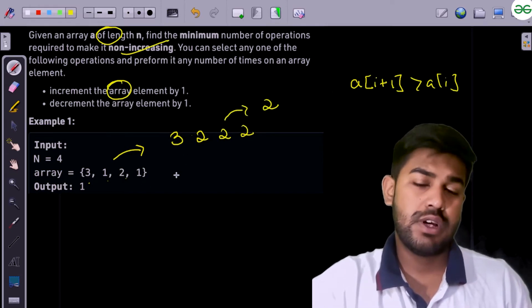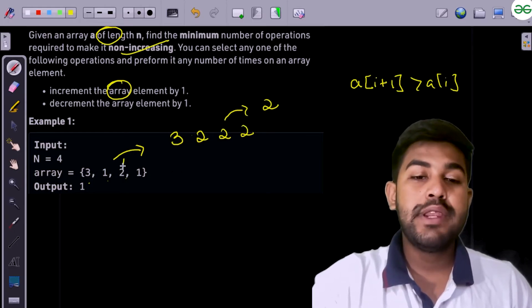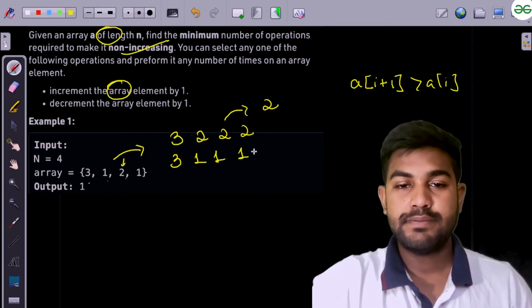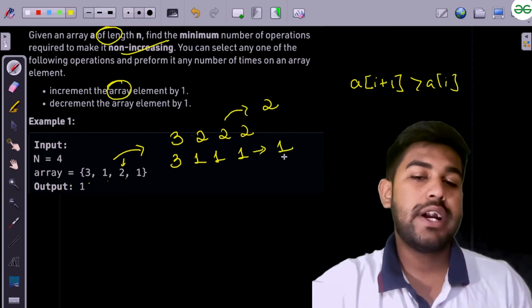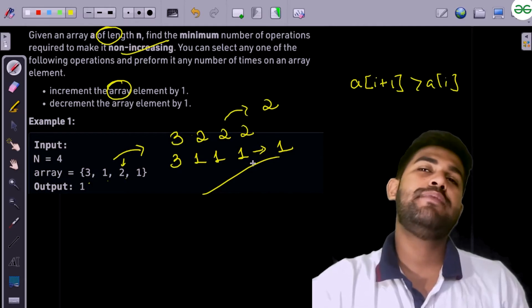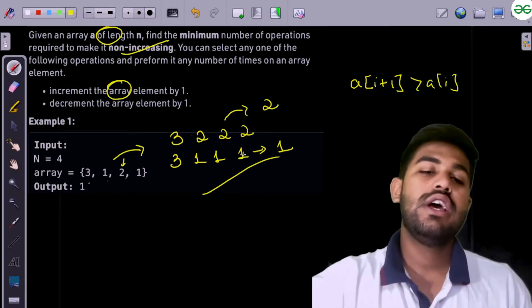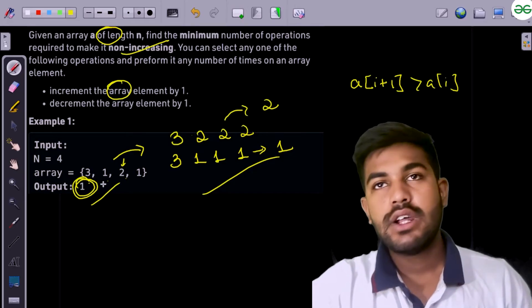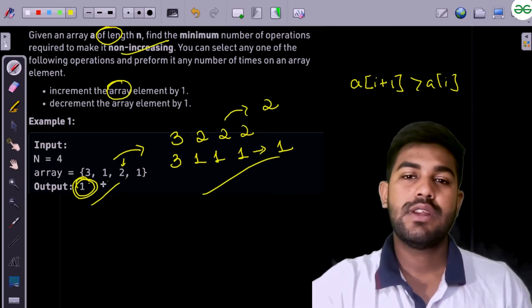Then the next one is, we can try to minimize this one. Then it would become 1, 1, 1 and 1. Then the number of operations required is 1. And if you do this on a pen and paper, you would find out that in between all the possible combinations, the minimum number of operations required is 1 to make it non-increasing.